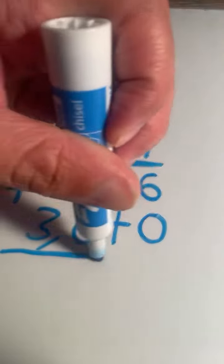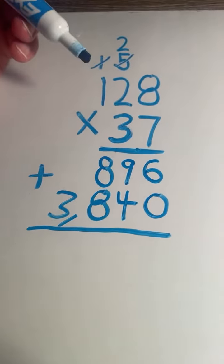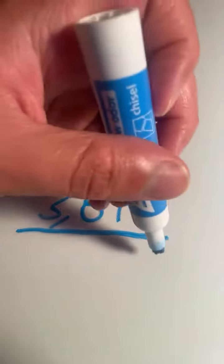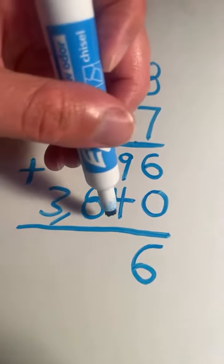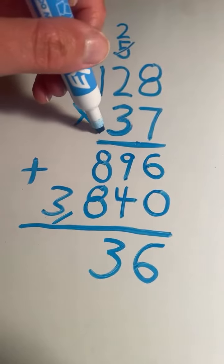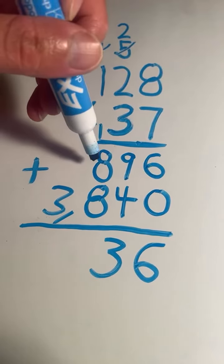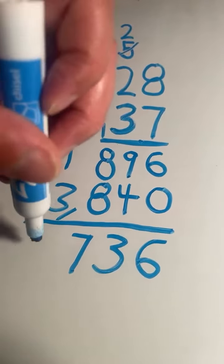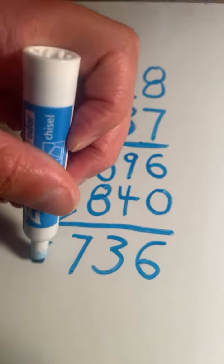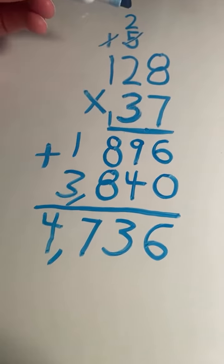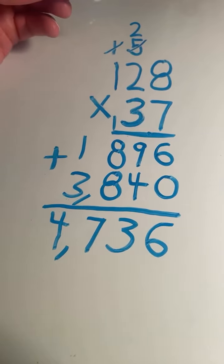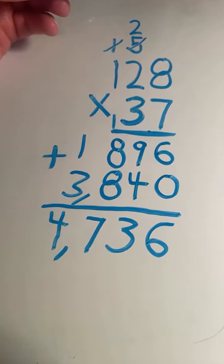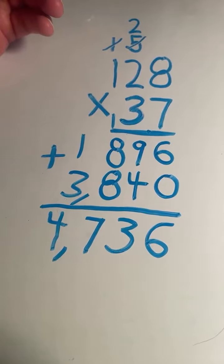Now to get our final answer, we have to add these two numbers together. 6 plus 0 equals 6. 9 plus 4 equals 13, 3 carry the 1. 8 plus 8 equals 16, plus 1 equals 17, 7 carry the 1. 1 plus 3 equals 4. And we have our final answer: 128 times 37 equals 4,736.